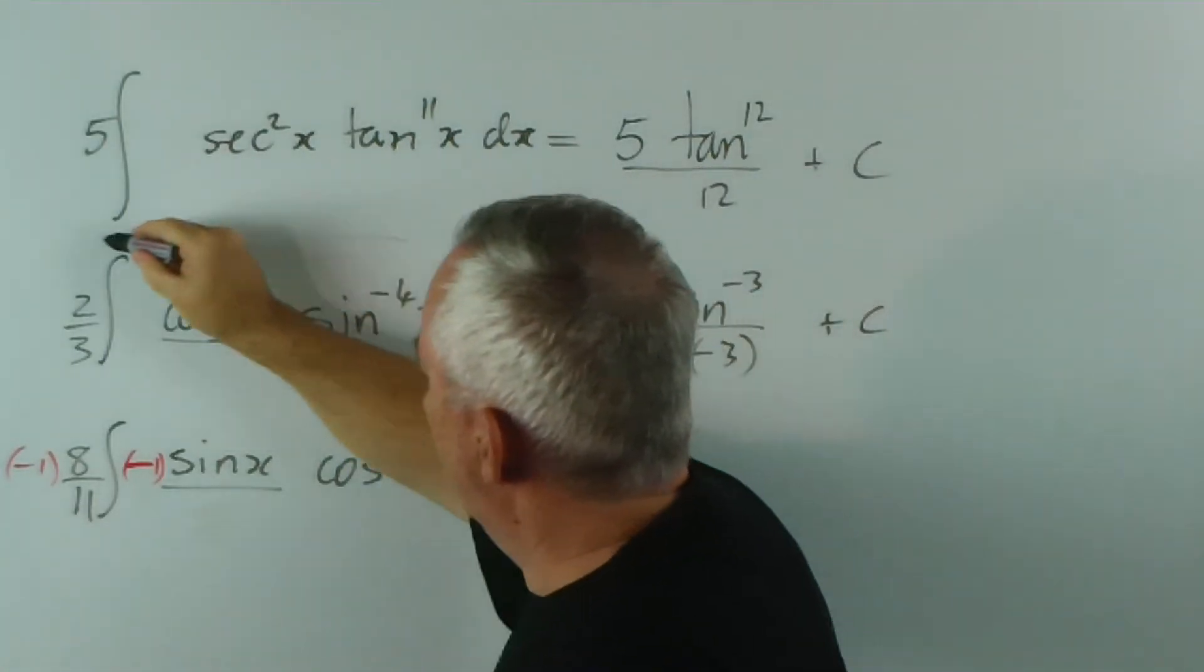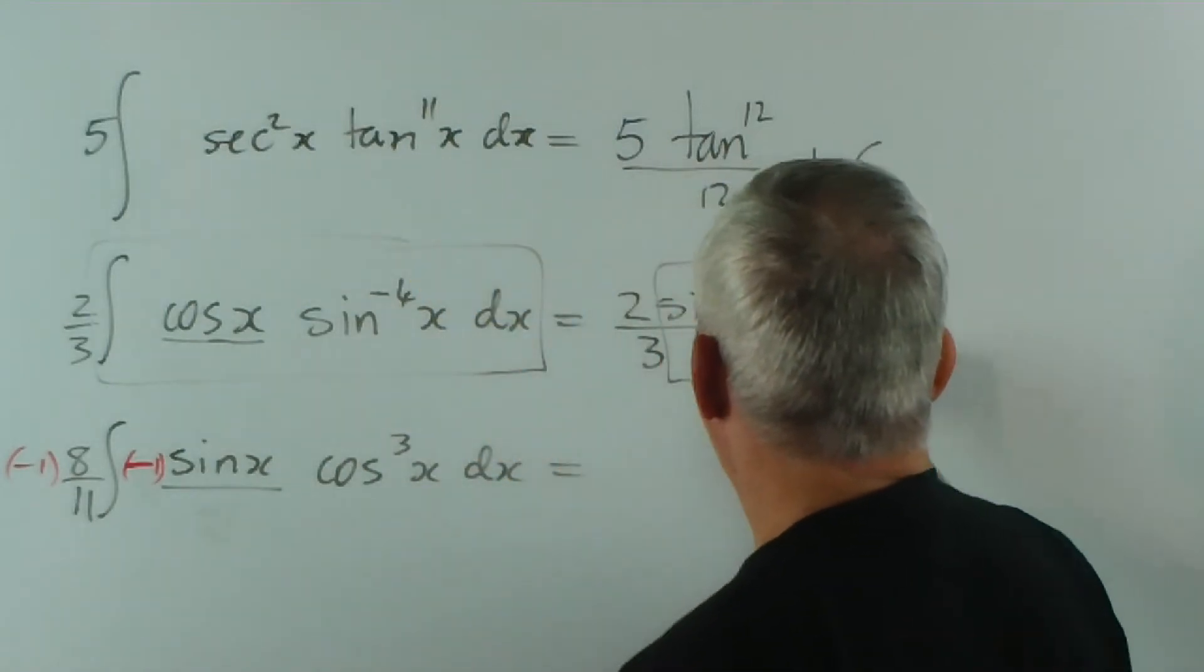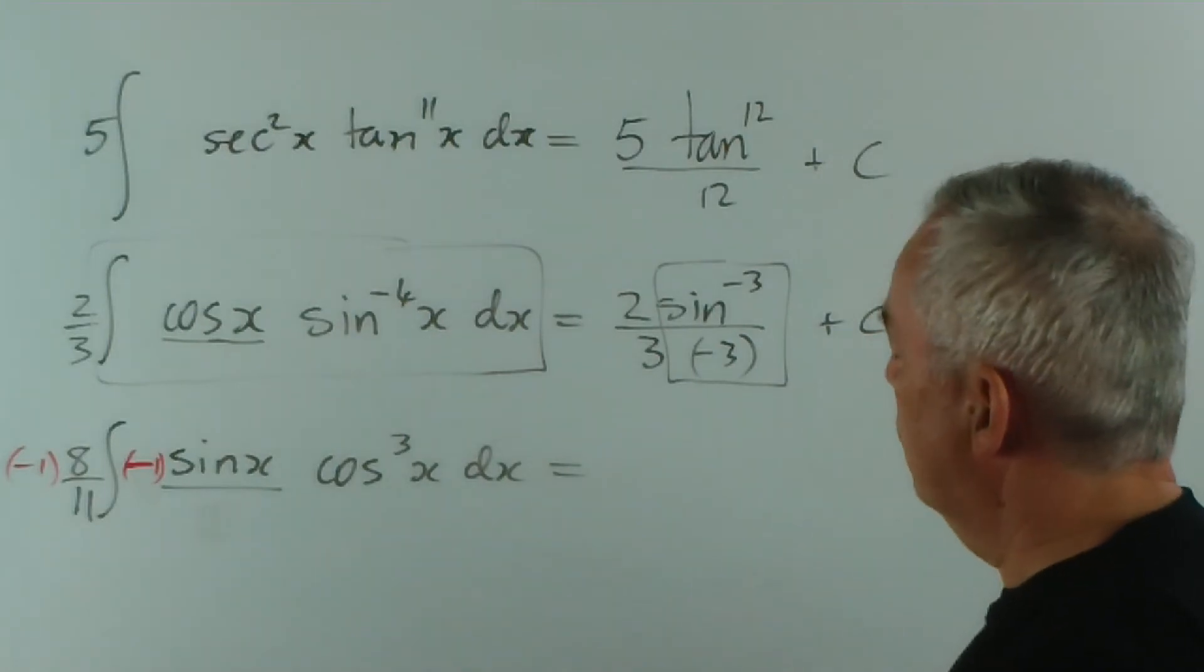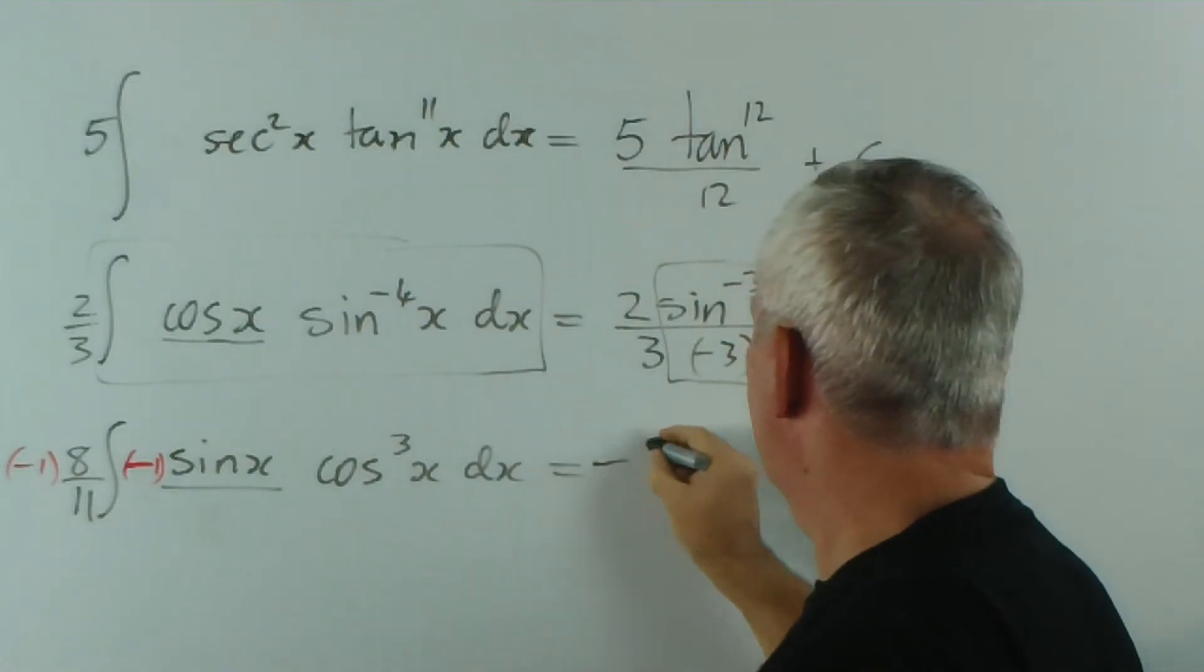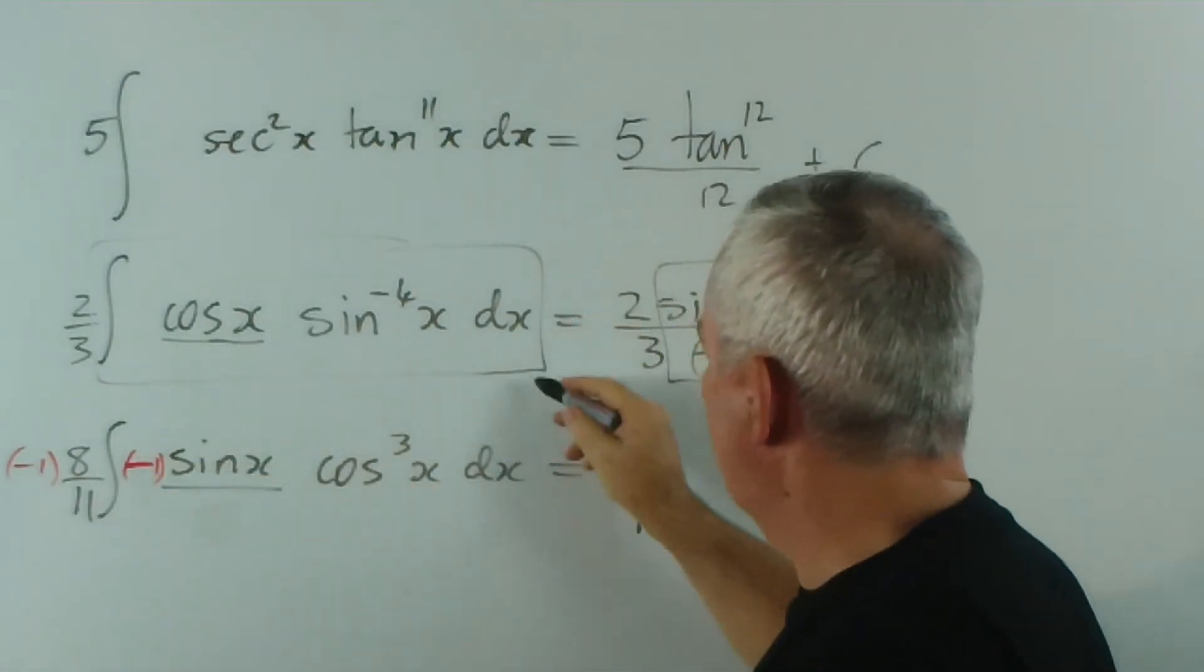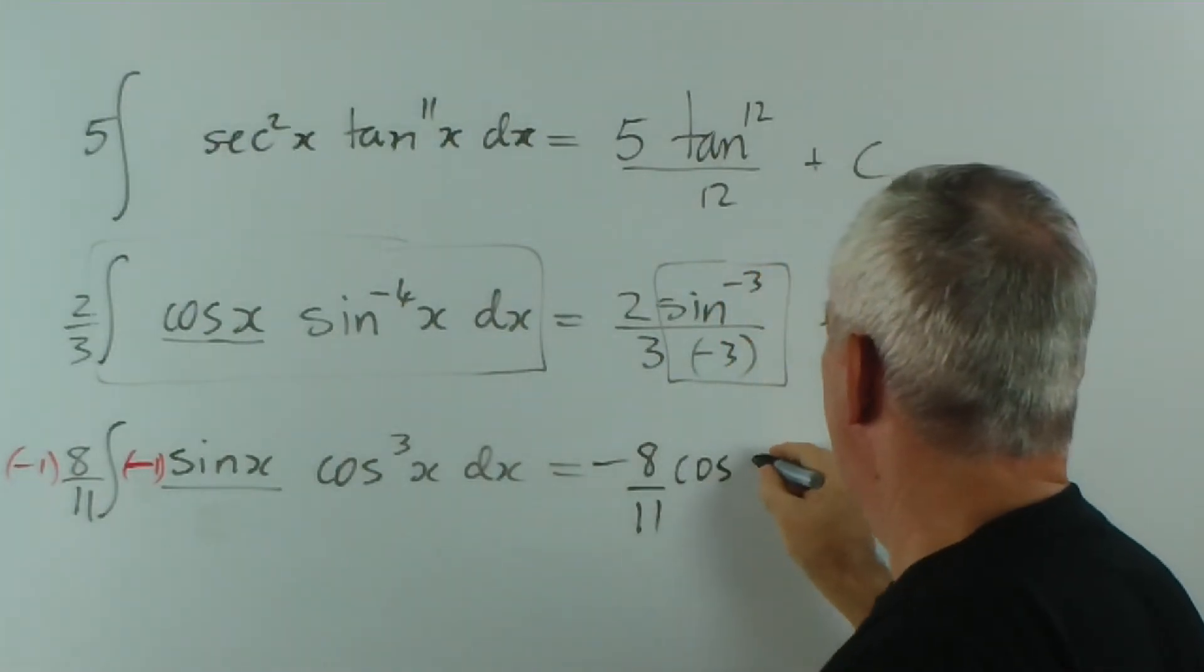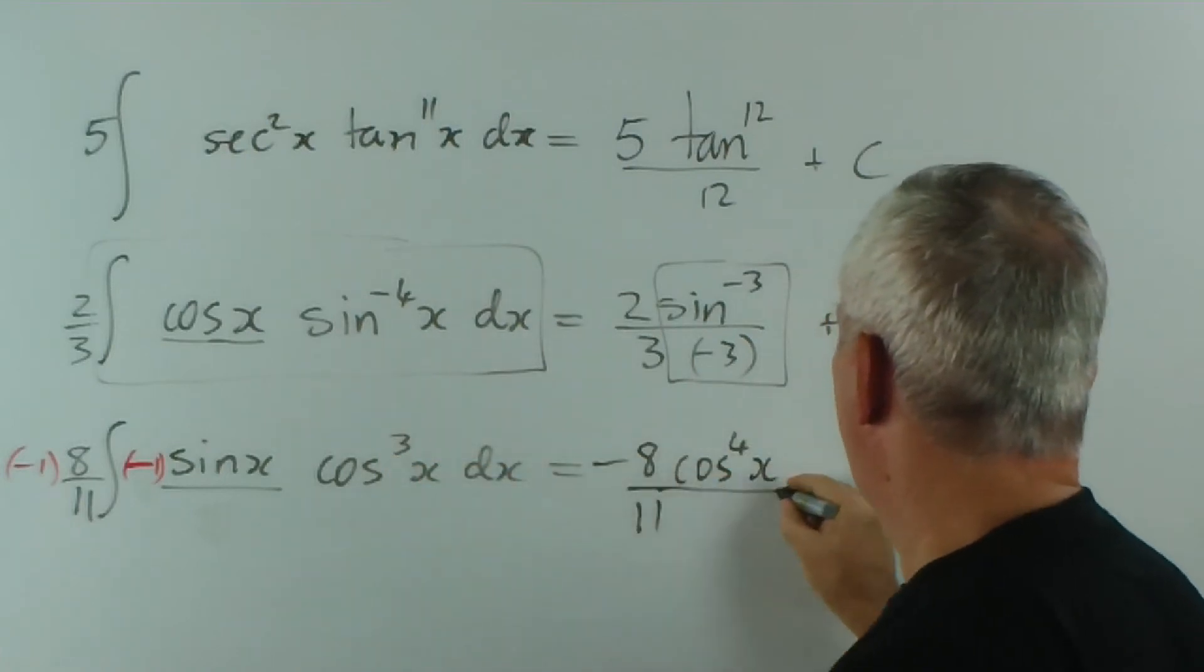Here we write the 2 thirds, and we write sine to one higher power over the minus 3 plus c. So you can see that this pattern is being replaced by that, which is what we showed at the beginning of the video. Here we're going to have minus 8 on 11, and this particular integral is going to be cos x to the power 4 over 4 plus c.